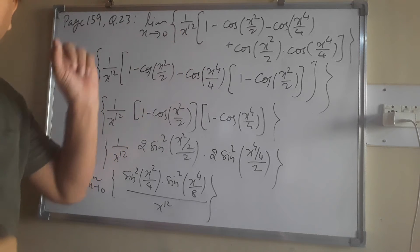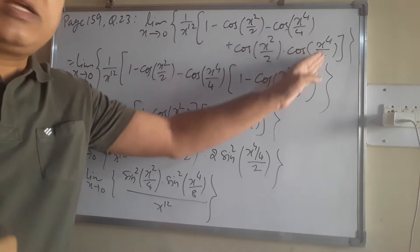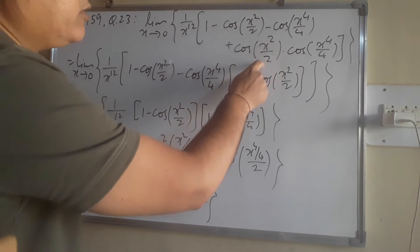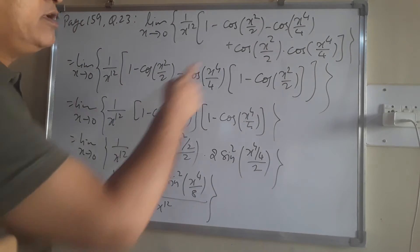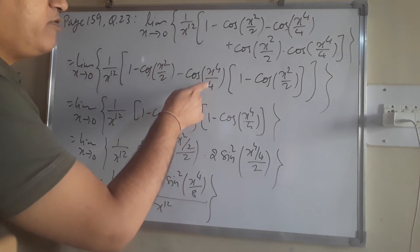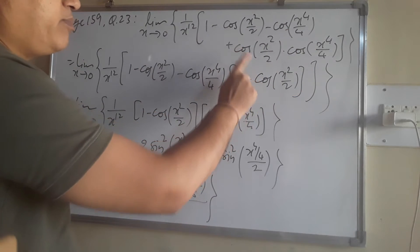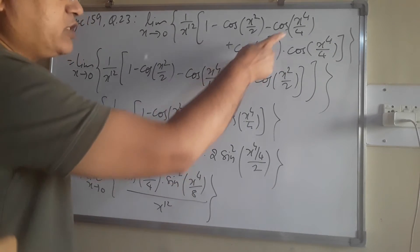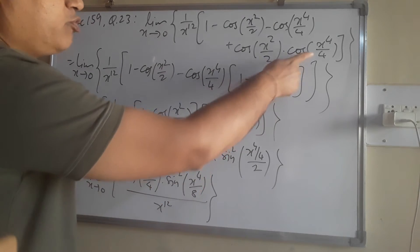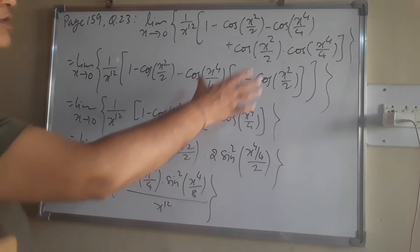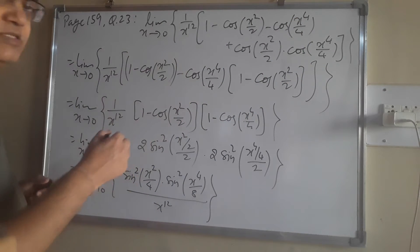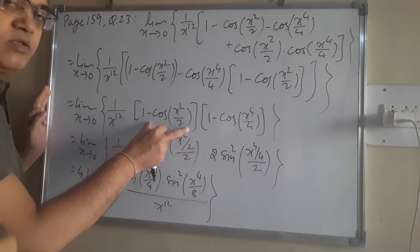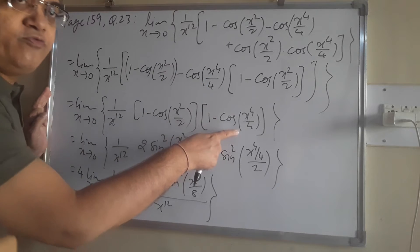x power 12 will become infinity, so we try to convert it. After thinking, one thing becomes clear: from both terms we take cos(x power 4 by 4) as common. After taking common, what remains is 1 minus cos(x power 4 by 4).